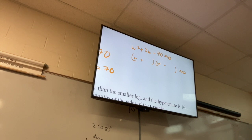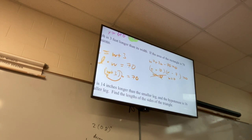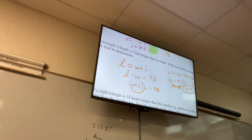Factor: that would be 10 and 7. Solutions for W are W equals 7 or W equals negative 10. Since width can't be negative, W equals 7 is our width. Plugging in: length equals 7 plus 3 equals 10, so L equals 10.